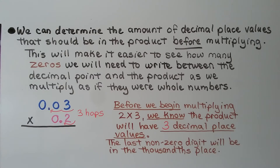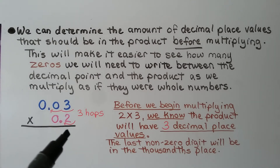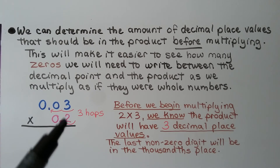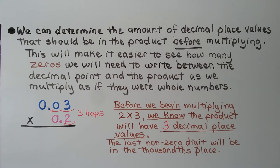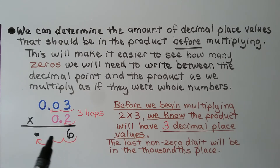We can determine the amount of decimal place values that should be in the product before multiplying. This will make it easier to see how many zeros we'll need to write between the decimal point and the product as we multiply as if they were whole numbers. We have 2 times 3 — we'd put a 6 here. Before we begin multiplying, we know the product will have 3 decimal place values. We know the last non-zero digit, this 6, will be in the thousandths place. We can put 2 zeros here as placeholders for the tenths and hundredths. 3 hundredths times 2 tenths equals 6 thousandths.